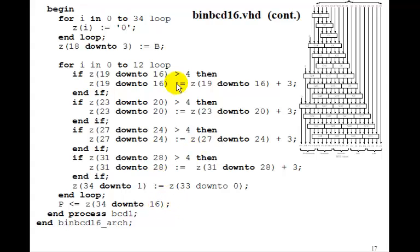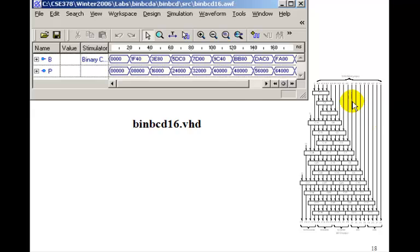So you can do any size B you want. It just changes the limits that you have for Z and for P. And here's the simulation for the 16 bit to see that it works. Here's zero incrementing by 8,000 here. And so FA00 is equal to 64,000 decimal. So these binary to BCD converter programs are very useful to change a hex number to the corresponding decimal number. Thank you.